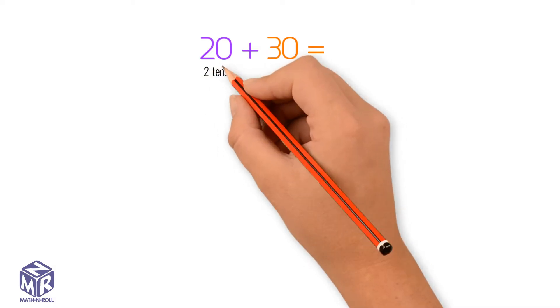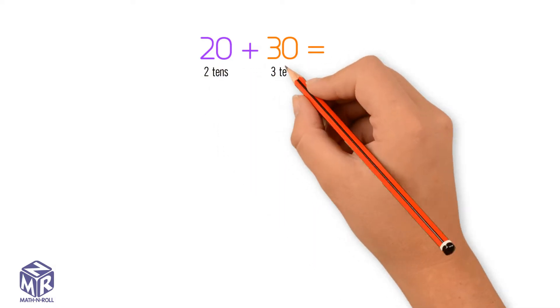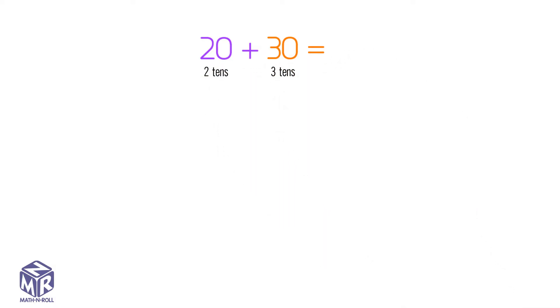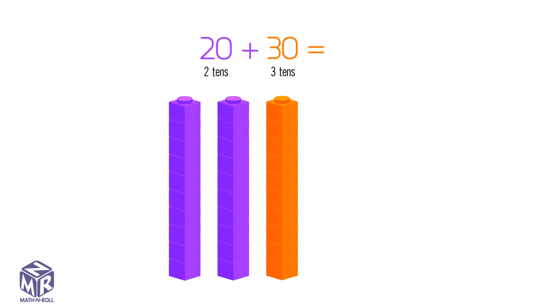20 has two tens, 30 has three tens. Let's make a model. Add the tens. We get five tens or 50.